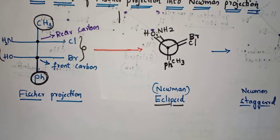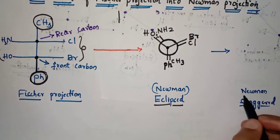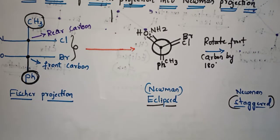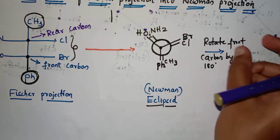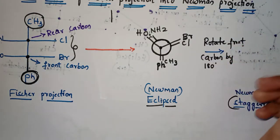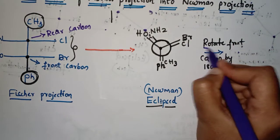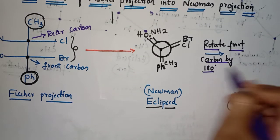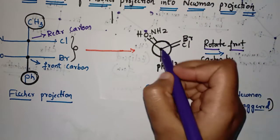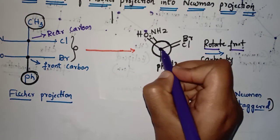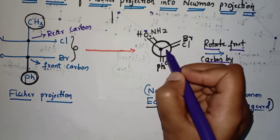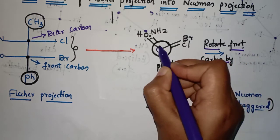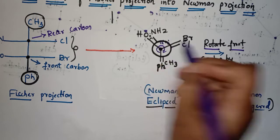Now we have got the Newman eclipsed form. We have to convert it into Newman staggered form. To convert Newman eclipsed into Newman staggered, we have to rotate the front carbon by 180 degrees. This dot represents the front carbon, so we rotate the front carbon by 180 degrees.